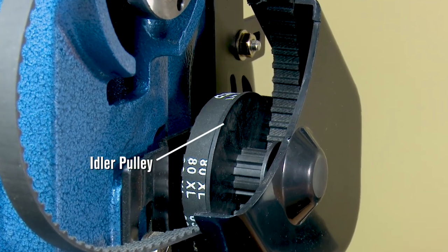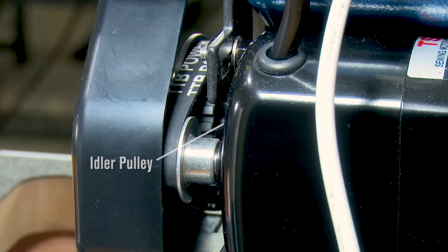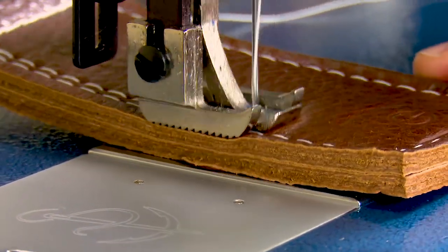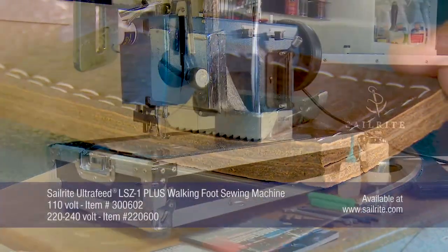The Ultrafeed LSZ1 includes a two belt drive system which incorporates an idler pulley for more power and better slow speed control.